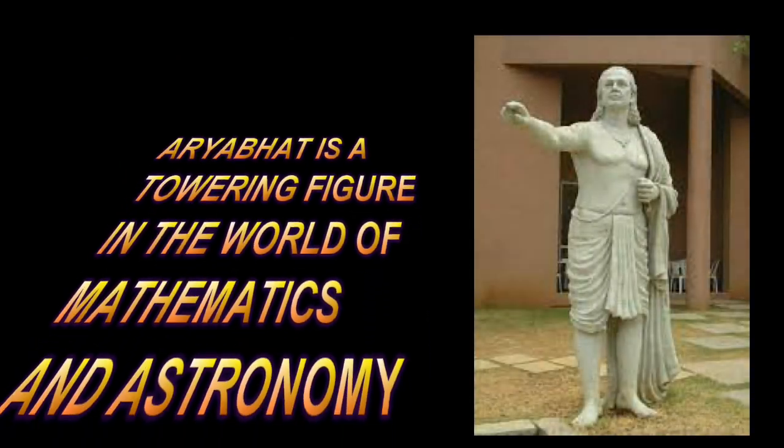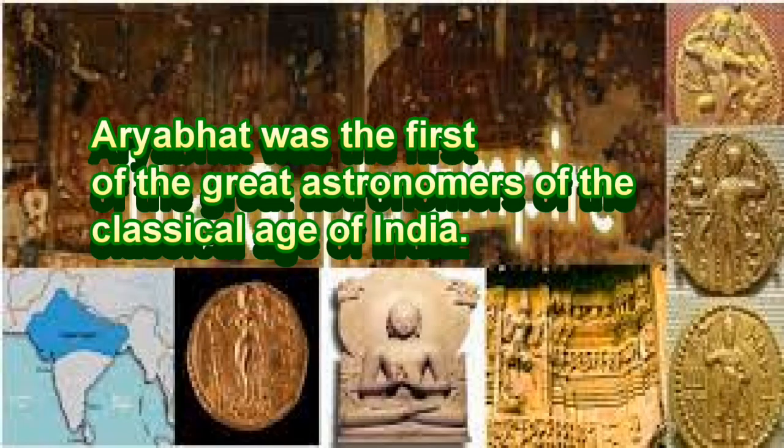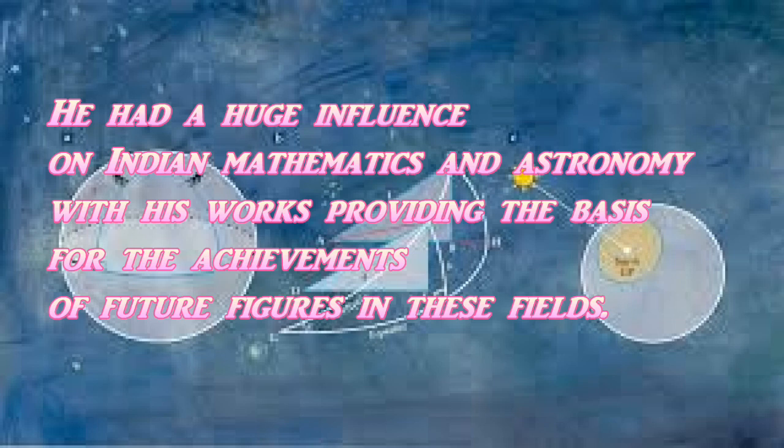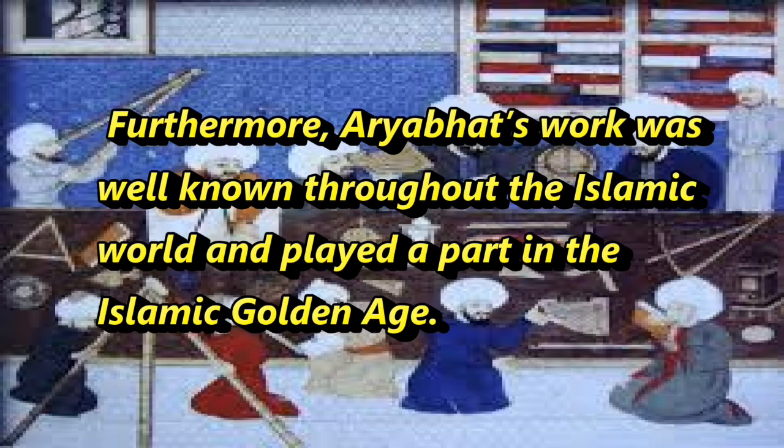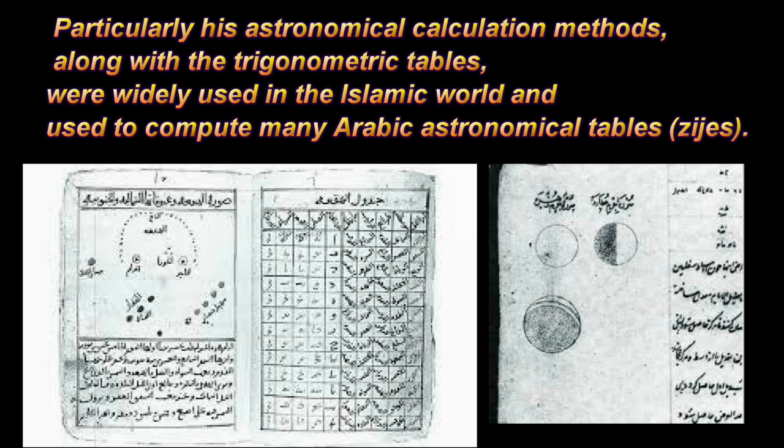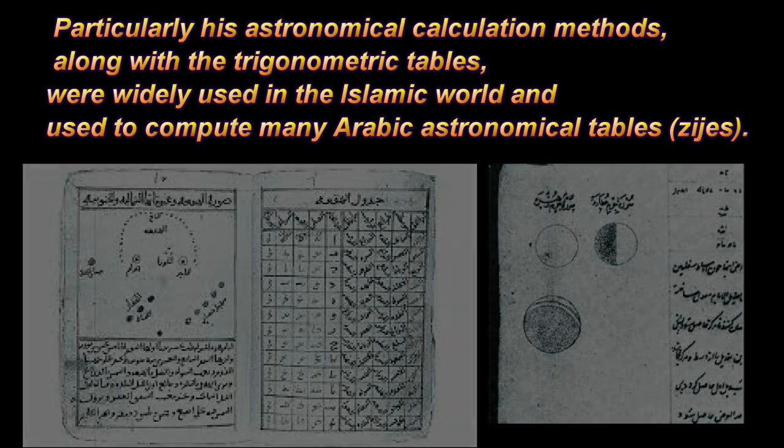Aryabhata is a towering figure in the world of mathematics and astronomy. He was the first of the great astronomers of the classical age of India. He had a huge influence on Indian mathematics and astronomy, with his works providing the basis for the achievements of future figures in these fields. Furthermore, Aryabhata's work was well known throughout the Islamic world and played a part in the Islamic golden age. Particularly his astronomical calculation methods along with the trigonometric tables were widely used in the Islamic world and used to compute many Arabic astronomical tables.